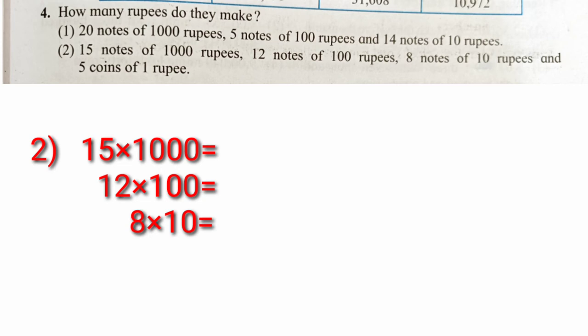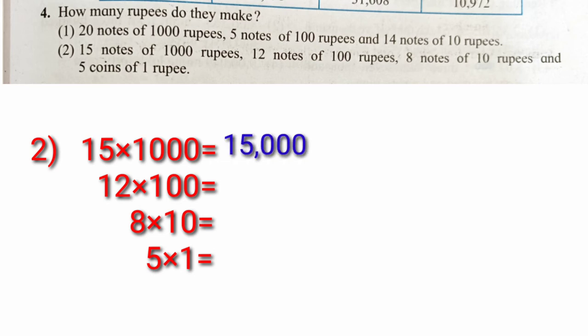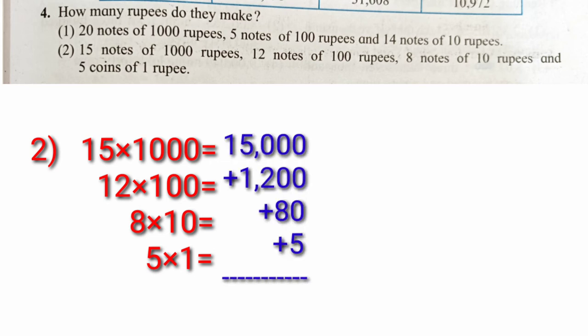And five coins of one rupee. So add all these: fifteen thousand, one thousand, two hundred, eighty, and five. The answer is sixteen thousand two hundred and eighty-five.